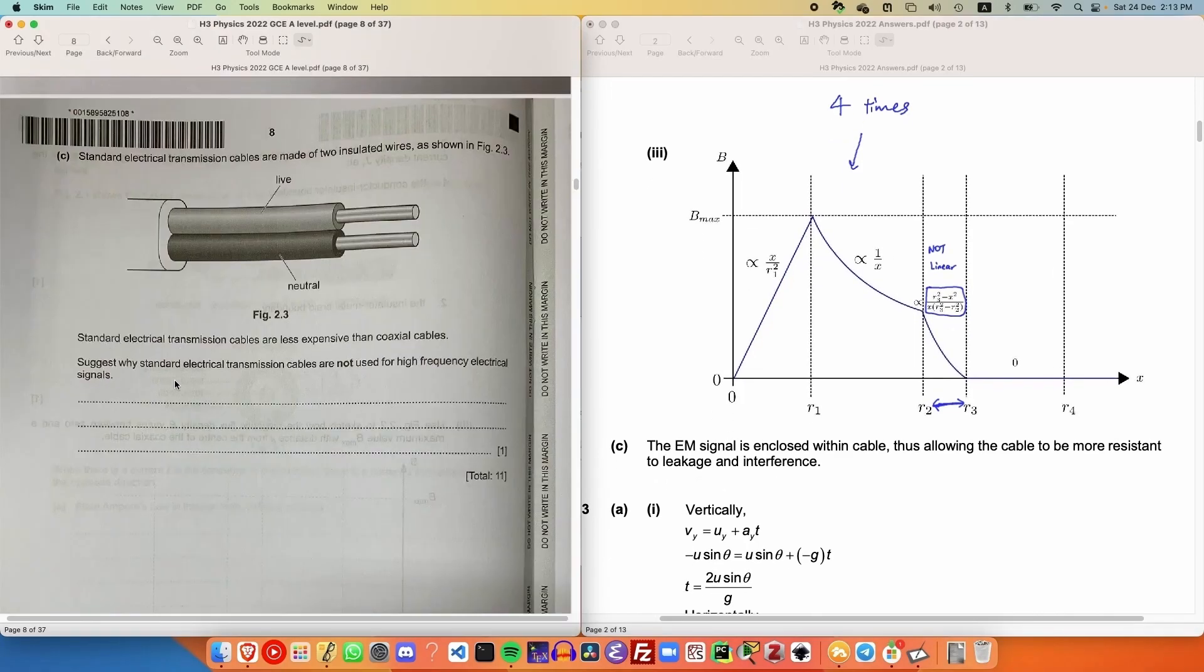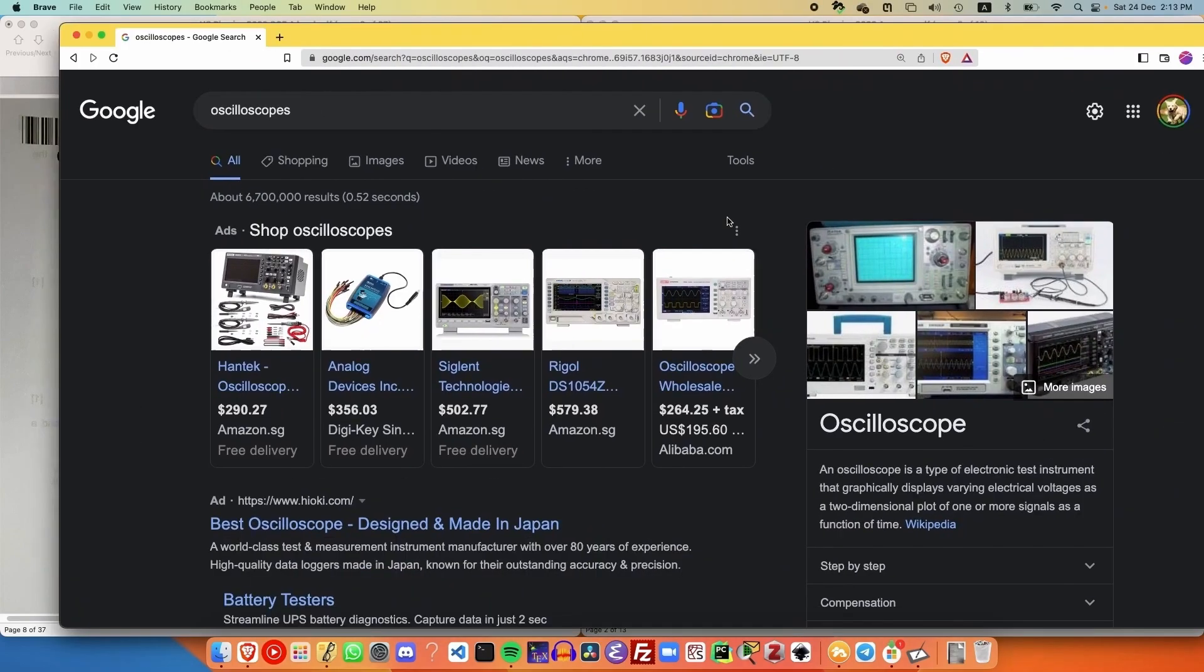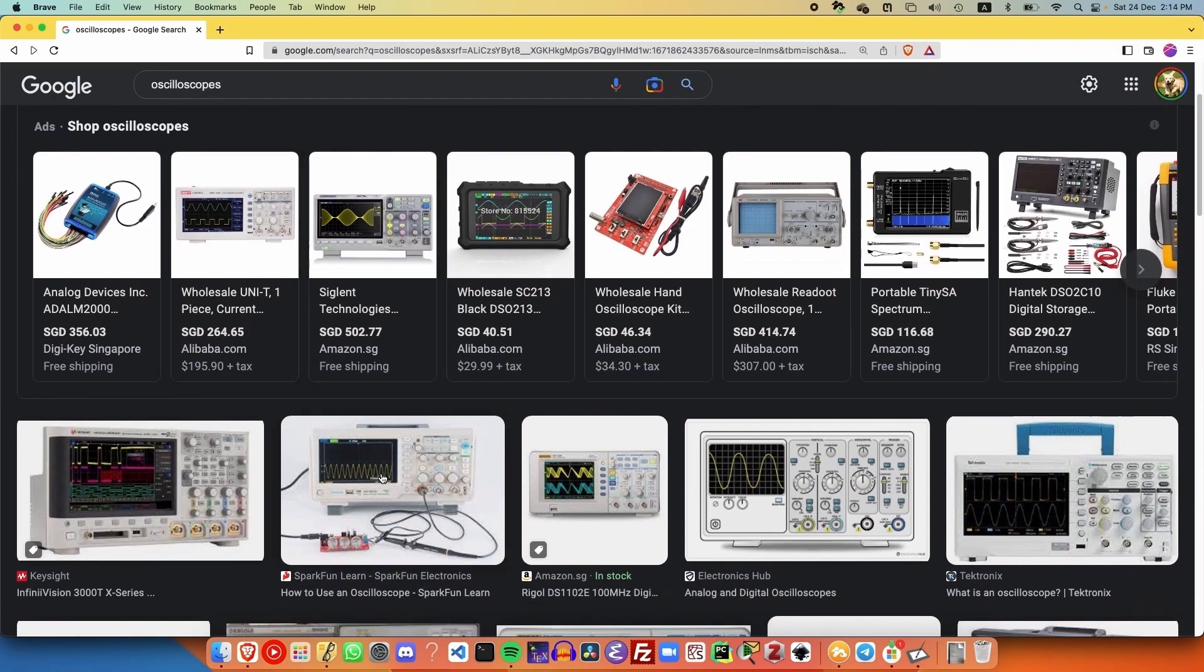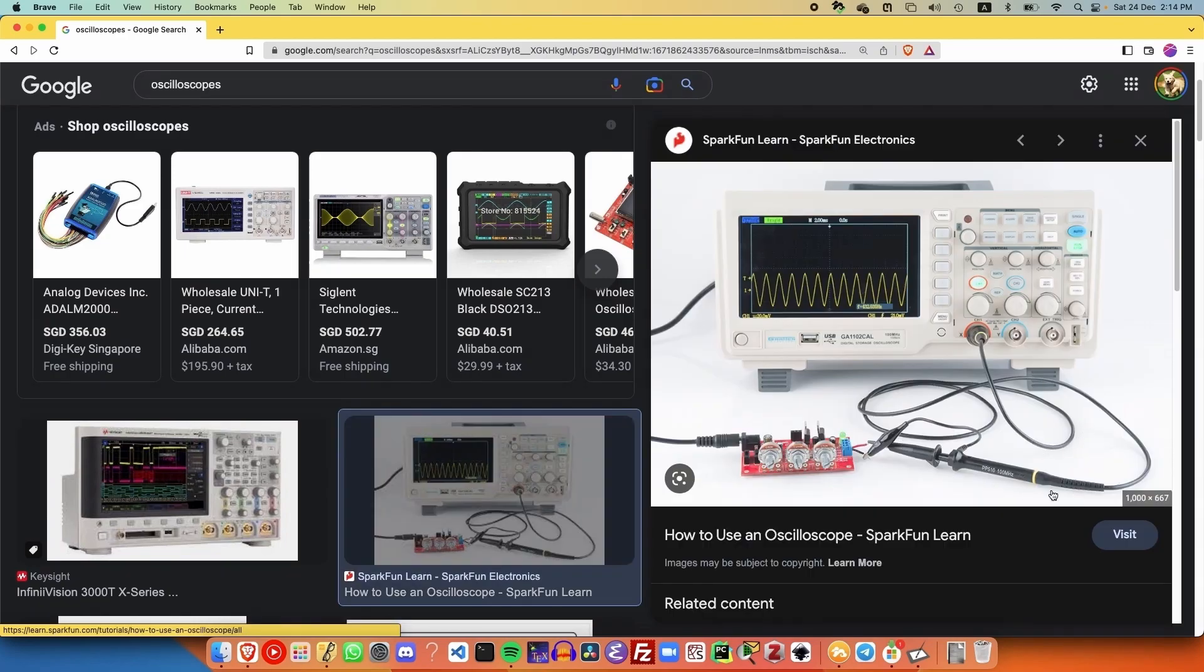Now, for part C, suggest why standard electrical transmission cables are not used for high-frequency electrical signals. We believe that the main reason is because of noise, namely that coaxial cables are particularly popular for oscilloscopes. If we look at an oscilloscope over here, we can see that the cables that oscilloscope use to transmit information are all coaxial, whereas for power transmission, it is rare to use a coaxial cable.